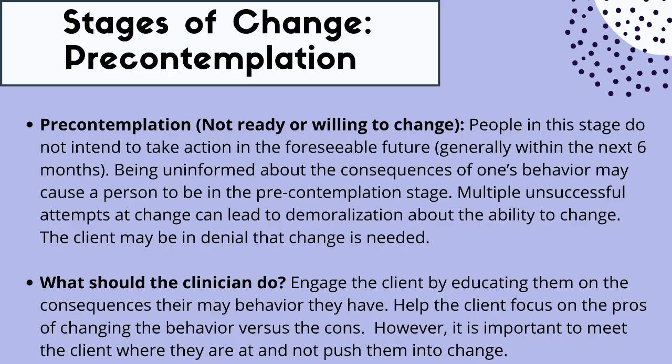Let's break down pre-contemplation — that was before a client even entered the wheel of change. This is when someone's not ready or willing to change. People in the pre-contemplation stage do not intend to take action in the foreseeable future, generally within the next six months. They might be uninformed about the consequences of their behavior, or they might have defense mechanisms or trauma that's blocking them. They might have had multiple unsuccessful attempts in the past and feel demoralized, or even feel they're not capable of changing. The client might also be in denial that change is needed, even when family members are seeing behaviors that need to change.